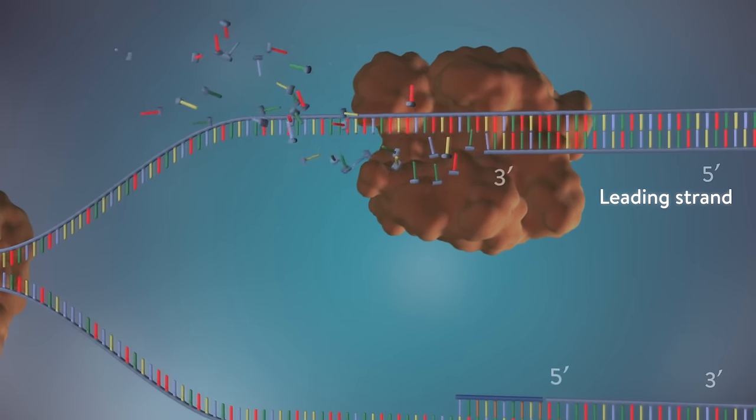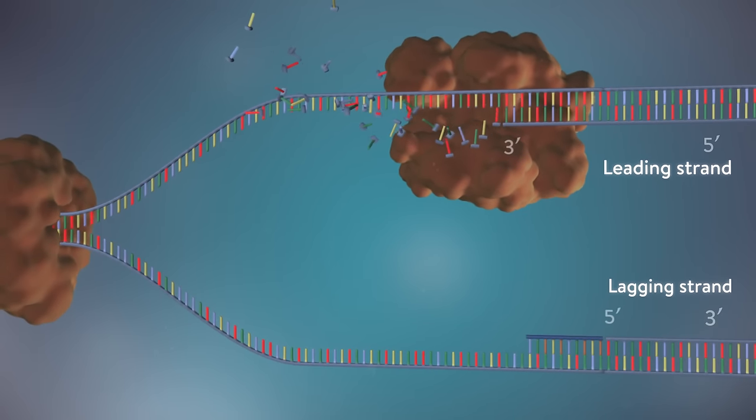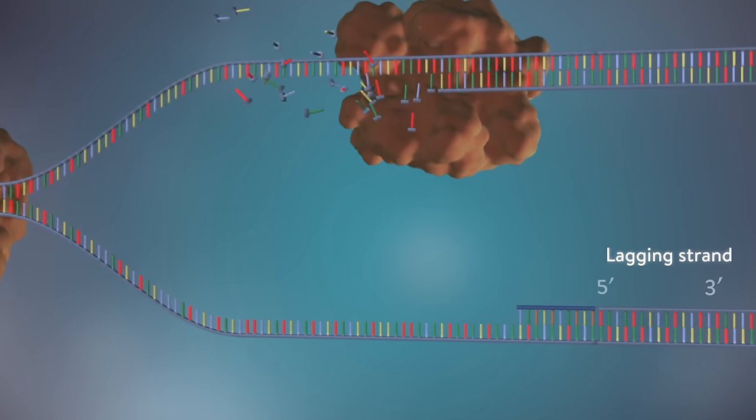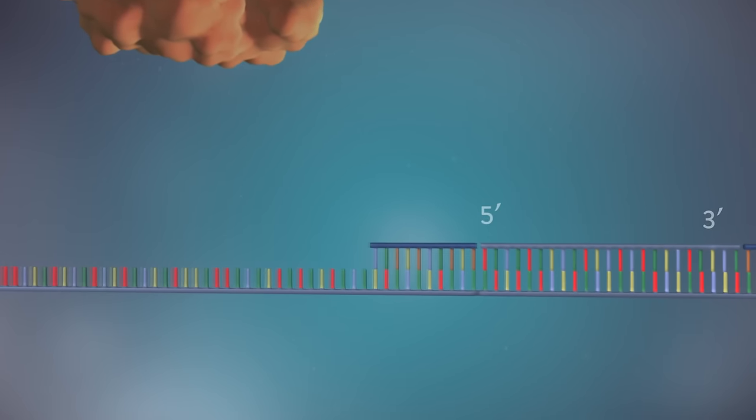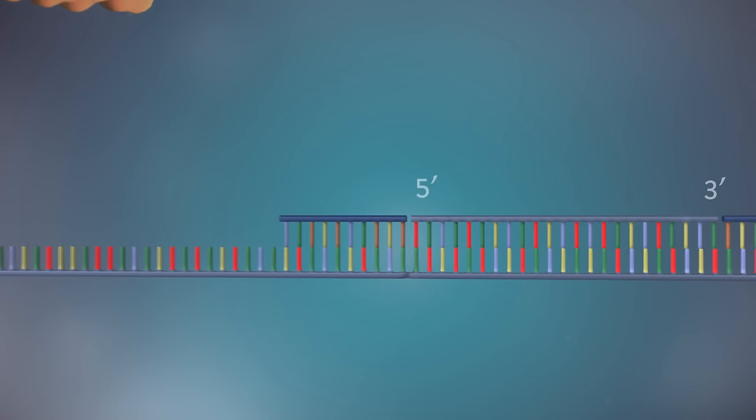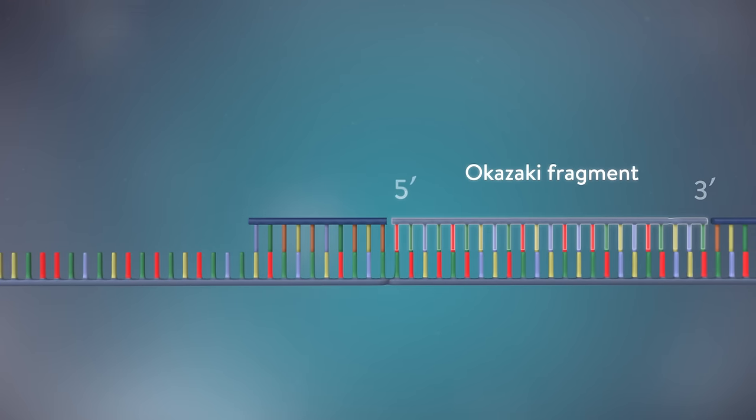The other strand, the lagging strand, cannot be made in this continuous way because it runs in the opposite direction. The DNA polymerase can therefore only make this strand in a series of small chunks called Okazaki fragments.